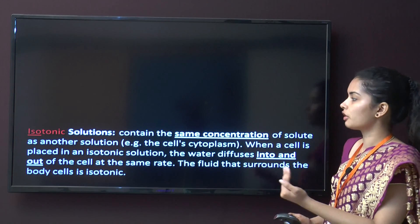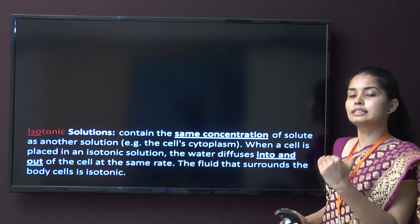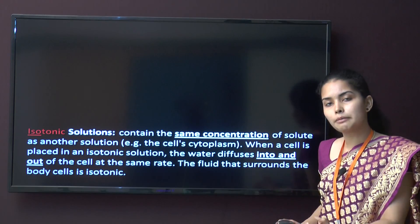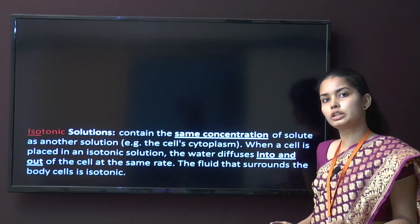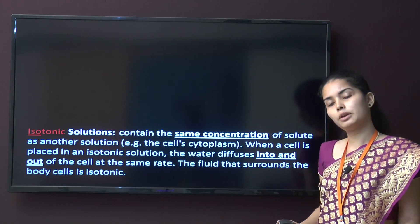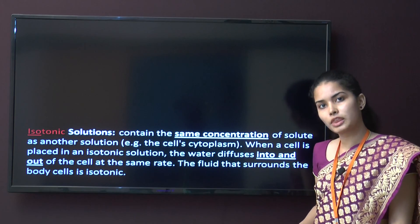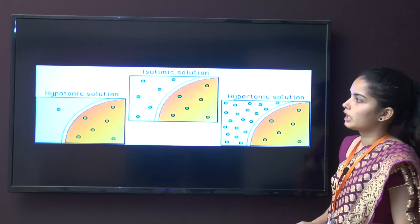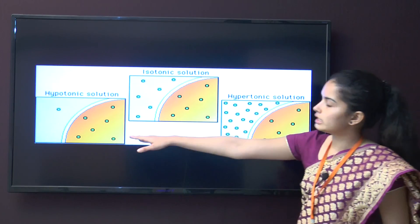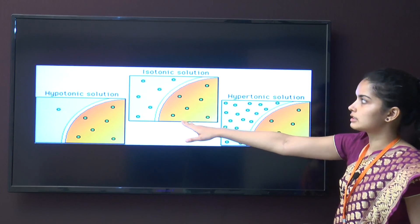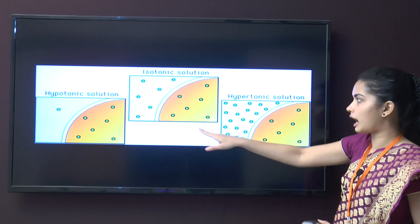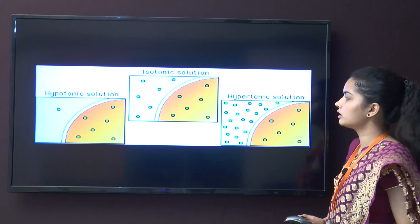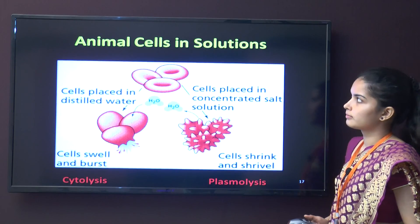An isotonic solution means the concentration is the same as the cell cytoplasm concentration. When the cell is kept in such a solution, there is no change because the entry and exit of water are similar. This shows the cell in hypotonic, isotonic, and hypertonic solutions respectively.